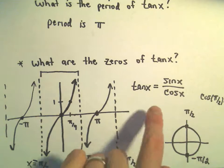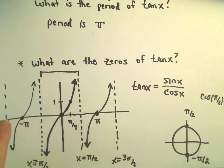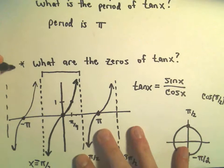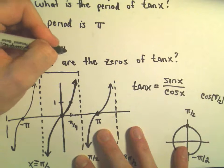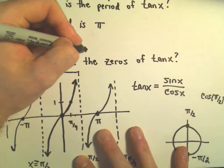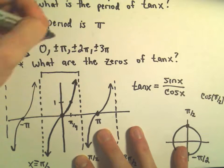So 0, π, 2π, 3π, negative π, negative 2π, negative 3π, etc. The way we can write the zeros: 0, positive and negative π, positive and negative 2π, positive and negative 3π.